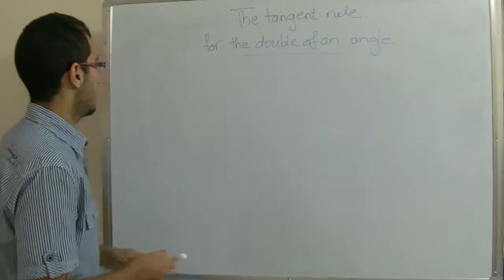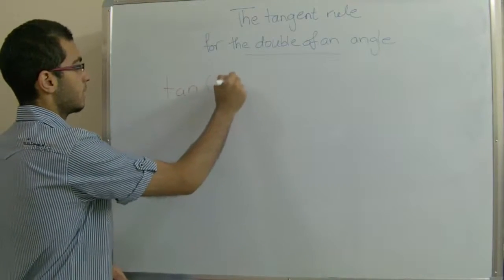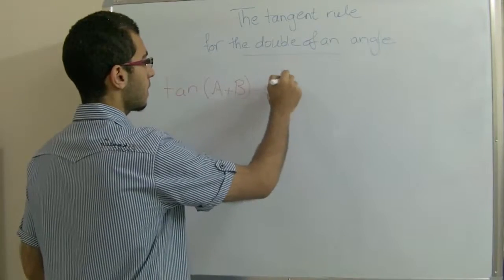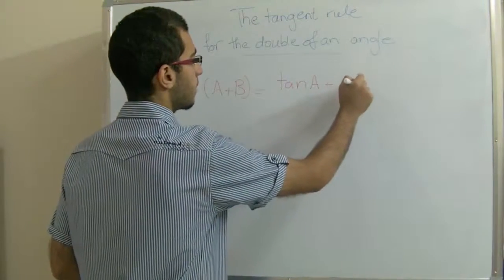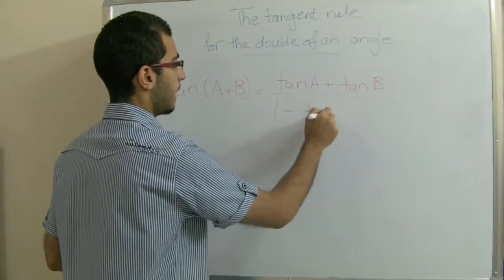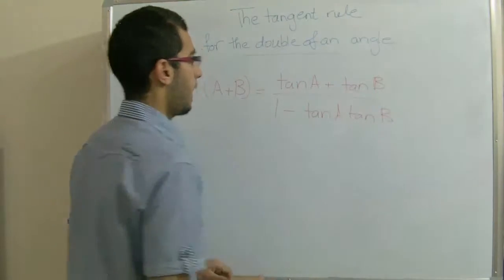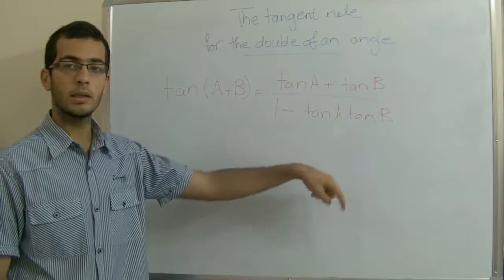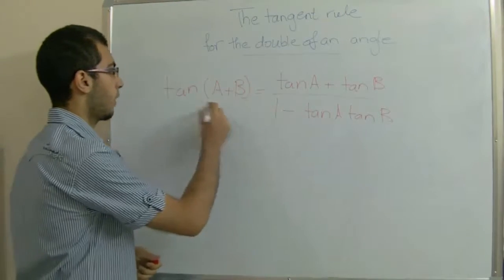We know that the tangent rule for the sum of two angles: tan(A+B) = tan A plus tan B over 1 minus tan A tan B. And in order to know where this rule came from, just click on this link here to show the proof of the tangent rule for the sum of two angles.